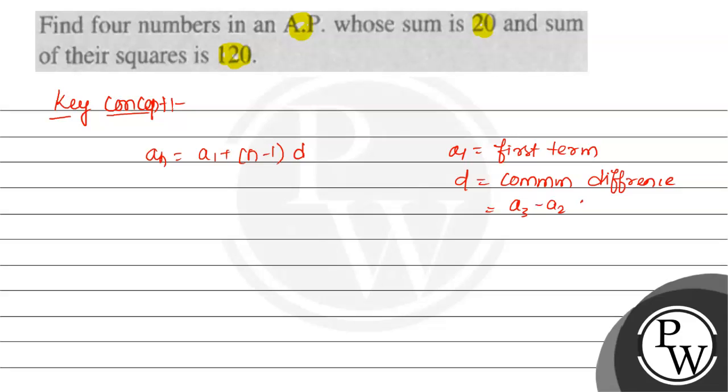How to calculate d? d will be A_3 minus A_2 or A_2 minus A_1. Let us consider the numbers be (A-3d), (A-d), (A+d), and (A+3d).